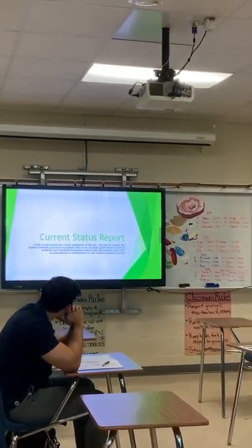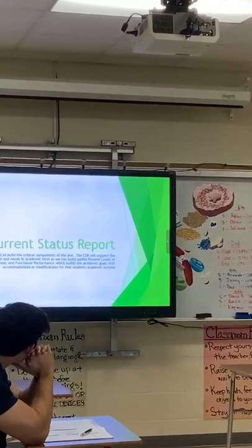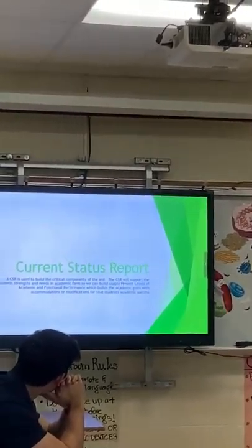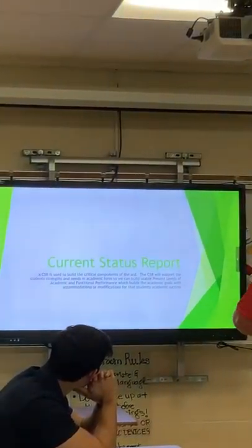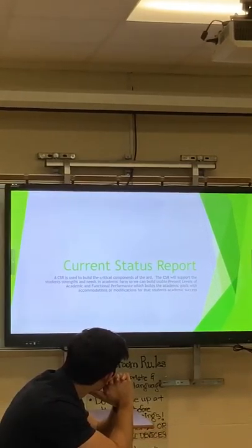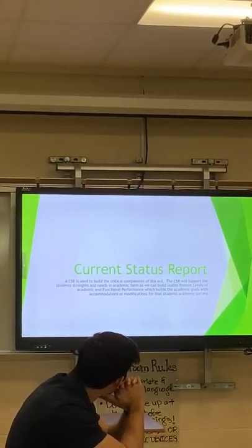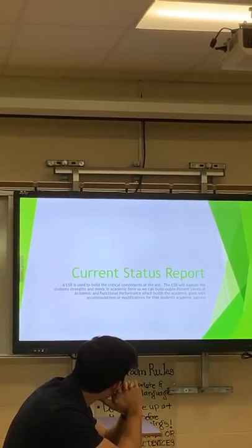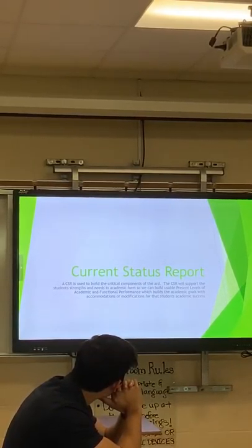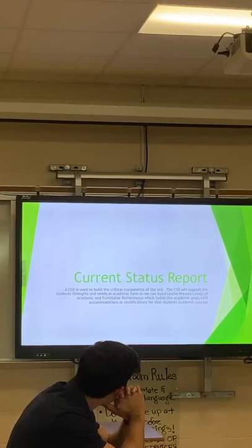How does the kid look inside class, on task? How are we meeting his needs — what are his needs? Are his needs that he needs more accommodations or fewer modifications? What does that look like in class, and what data do you have to support that? We have to have data to support a change in placement as well.